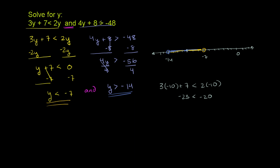And negative 10 has to work for this one as well. So you have 4 times negative 10, which is negative 40, plus 8, should be greater than negative 48. Negative 40 plus 8 is negative 32 — we're going 8 in the positive direction, so we're getting less negative. And negative 32 is greater than negative 48 — it's less negative. So this works. So negative 10 works.